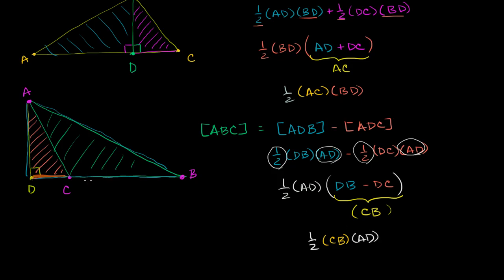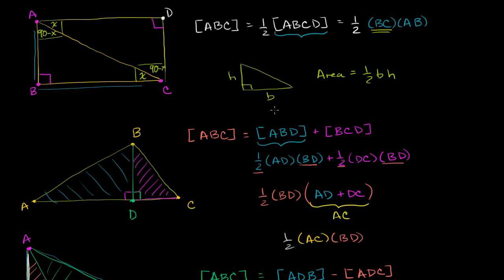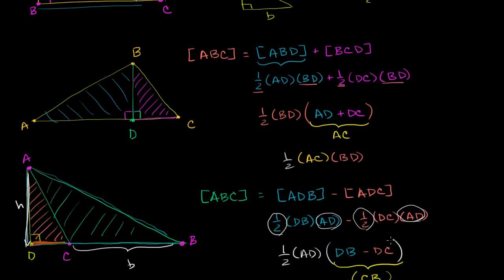What is this? It's one half times our base CB times our height AD — once again it's one half base times height. The height in this case, because it's not a right triangle, is not one of the sides. Someone would have to give you that information, or you'd have to figure out what the height is. But what's neat is that in any form of triangle, the area is one half base times height. Hopefully you found that useful.